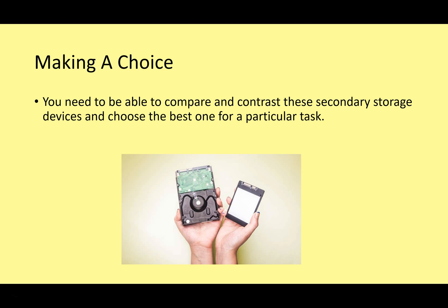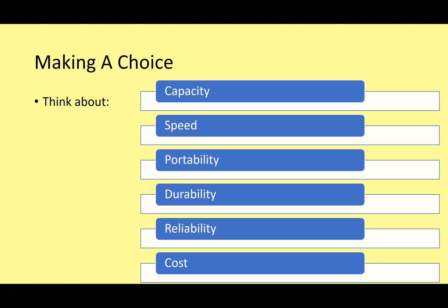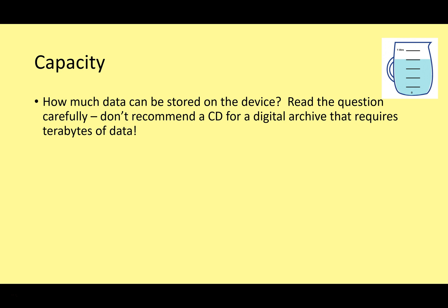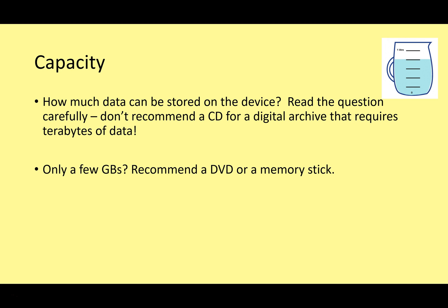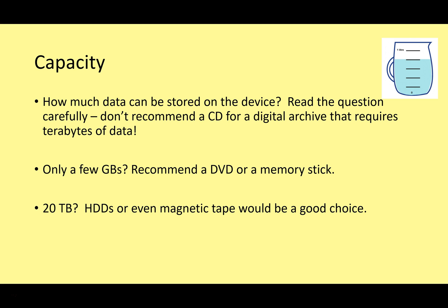When making a choice between storage devices, you need to consider capacity, speed, portability, durability, reliability, and cost. For capacity, think about how much data needs to be stored. Don't recommend a CD for a 20-terabyte digital archive. For only a couple of gigabytes, you could use a DVD or memory stick. For 20, 30, or 40 terabytes, you're looking at hard disk drives or possibly even magnetic tape, because magnetic tape is very cost effective.